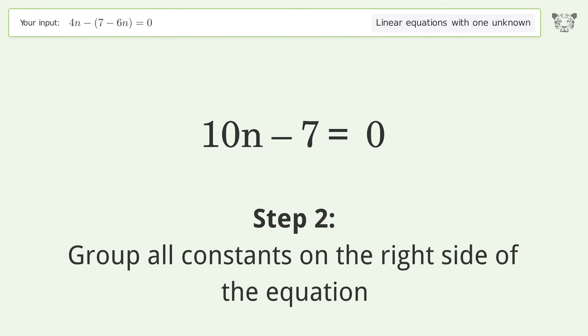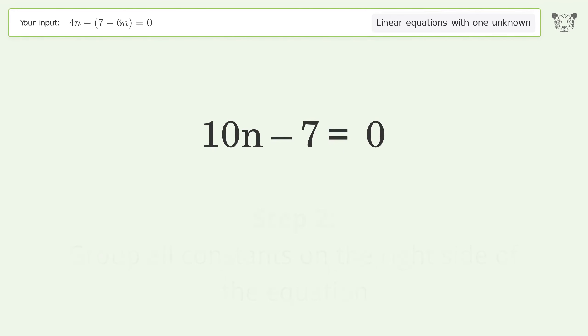Group all constants on the right side of the equation. Add 7 to both sides. Simplify the arithmetic.